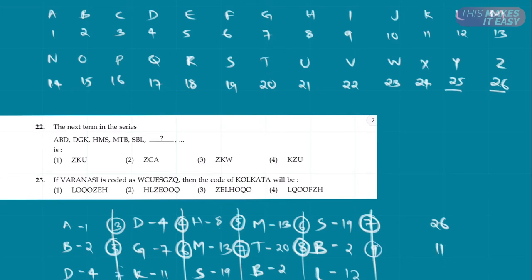Again, 4 plus 7 is 11, 11 plus 8 is 19, 19 plus 9 is 28. Again, instead of 28, we will write 2 because after 26 we will add 2. So again, starting from 1, 2, 2 plus 10 is basically 12, 12 plus 11 is 23.